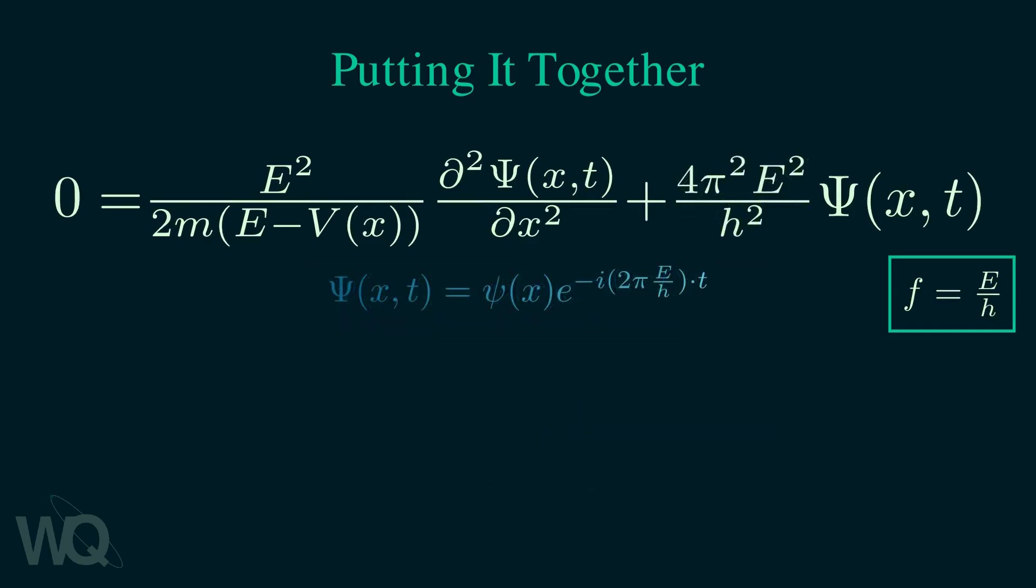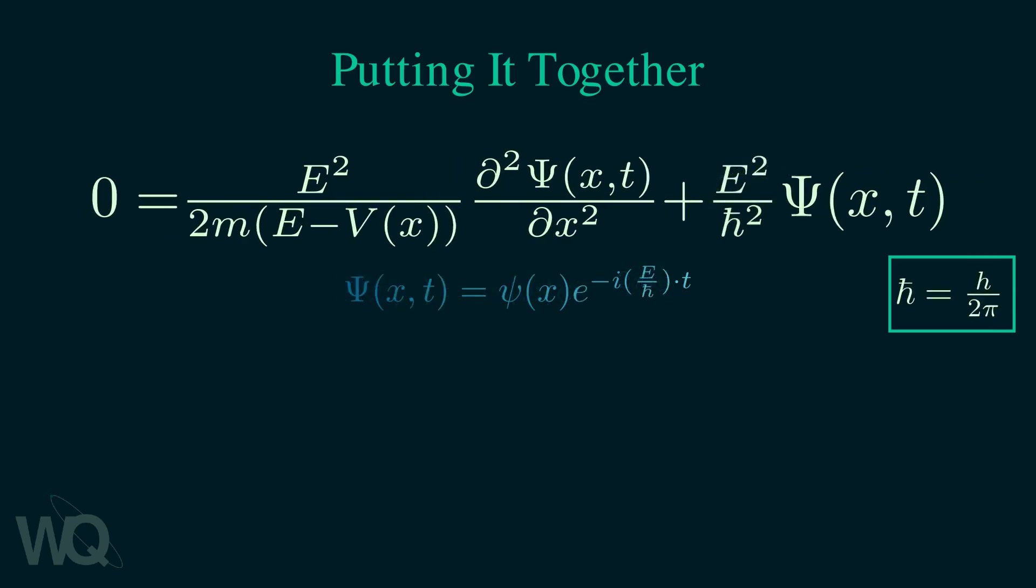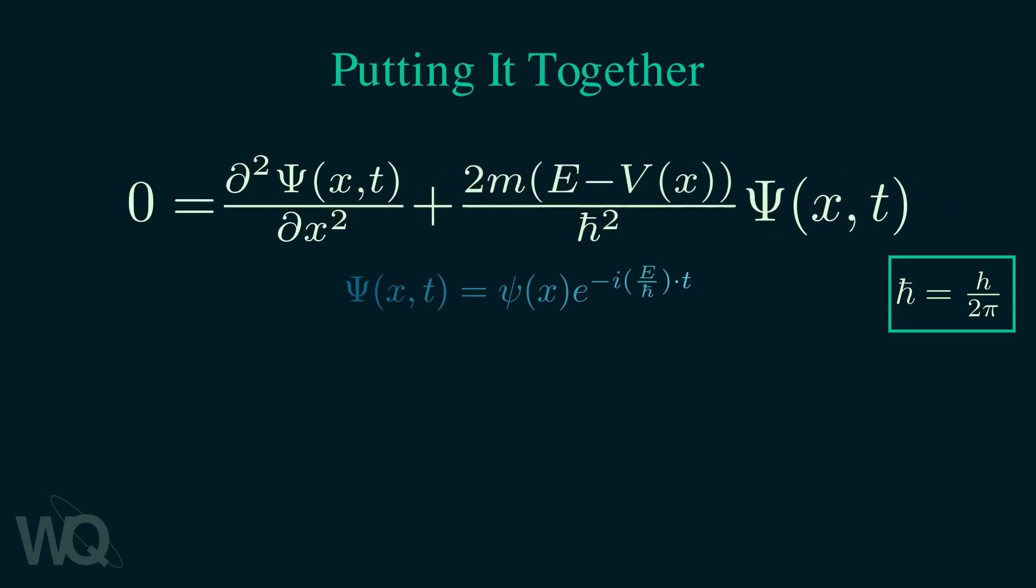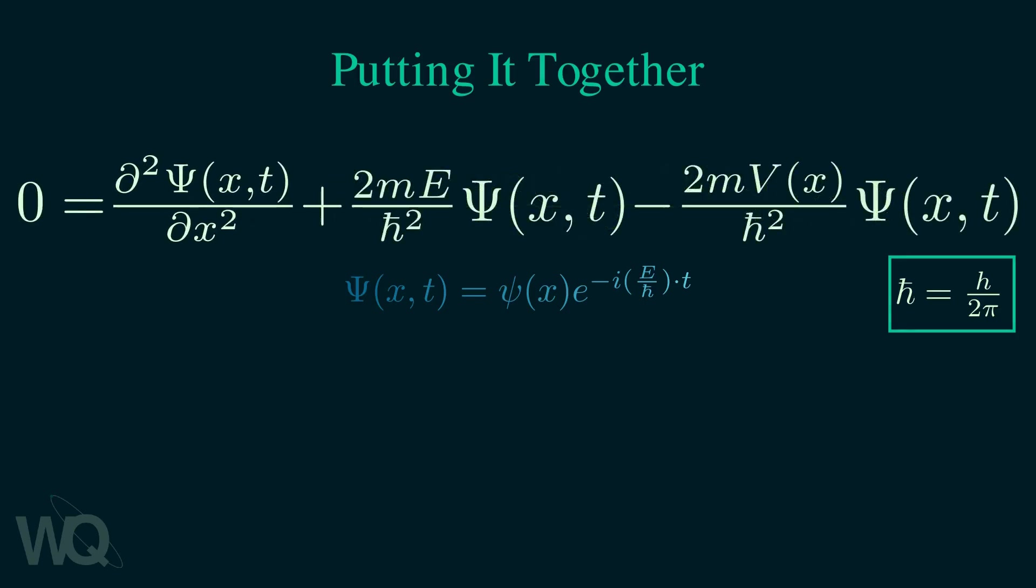And this is basically the Schrödinger equation. But you might not be able to recognize it yet. To get it to the usual form, we just need a little bit of algebra. First, let's introduce h-bar. Next, let's get rid of the coefficient of the first term. So we multiply the equation by its reciprocal. Now multiply out 2m and split up the second term.